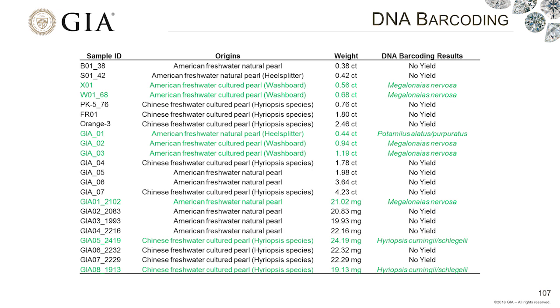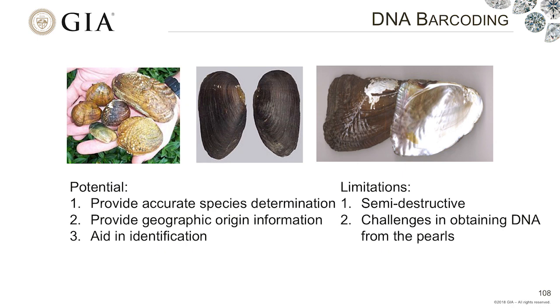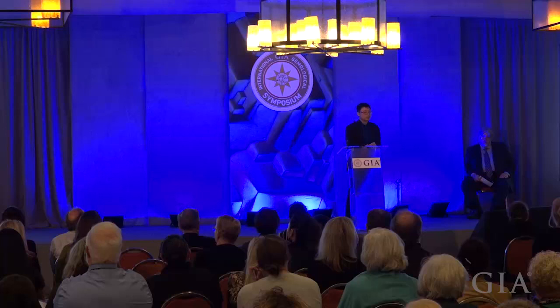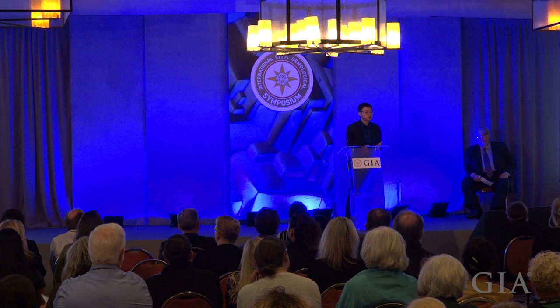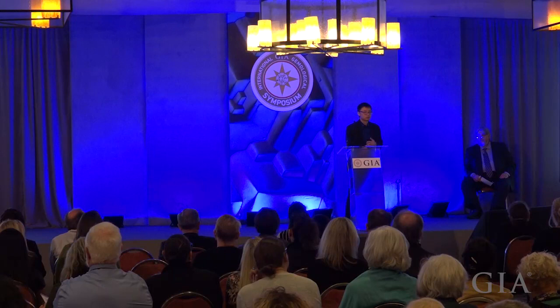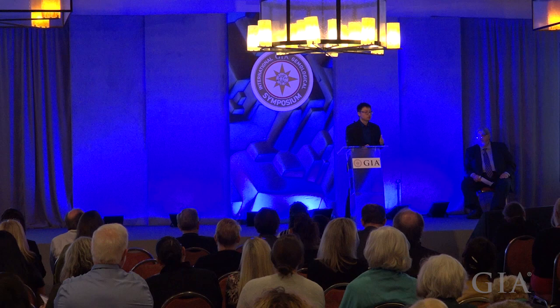However, if you look at the table, many of the samples do not have enough DNA yield. The limitation, similar to carbon dating, is that you need to get some powder for DNA extraction — somewhere at least 10 milligrams is needed. However, even if you do that, there's no guarantee that you will get DNA from the sample. Maybe there's not enough DNA to start with, or maybe the pearl has been processed or treated in a way that DNA has been degraded or destroyed. For example, Chinese freshwater pearls are usually bleached or heated in chemicals, and all these processes could damage the DNA content inside.